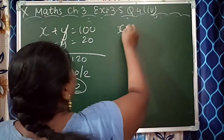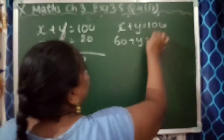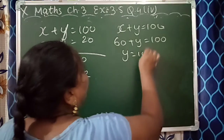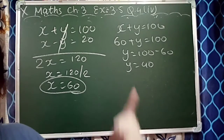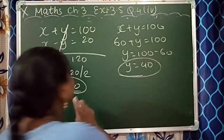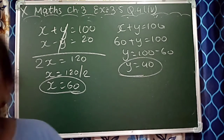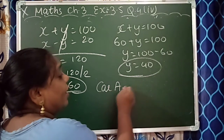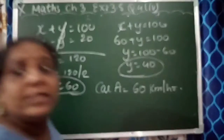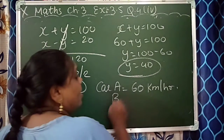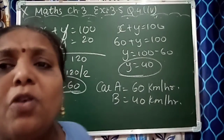Equation 2 is x plus y equals 100. Substituting x equals 60: 60 plus y equals 100, so y equals 100 minus 60, therefore y equals 40 km/h. Hence, the speed of car A is 60 km/h and the speed of car B is 40 km/h.